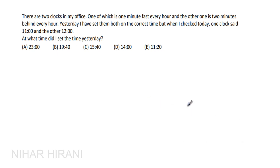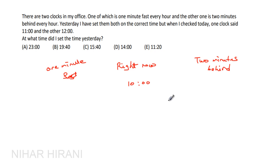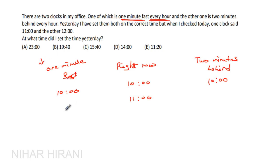This is a very simple question; I will explain it with a perfect example. Let us assume right now the time is 10 o'clock — this is not given in the question, I am just taking an example to make you understand. If right now the time is 10 o'clock and this clock is also set on the right time at 10 o'clock, all are showing 10 o'clock. Now at 11 o'clock, question says this clock is one minute fast every hour. So in one hour it will show 11:01, and the slow clock will show 10:58.